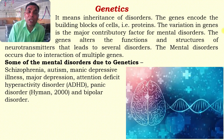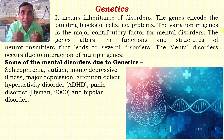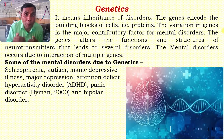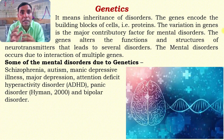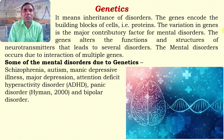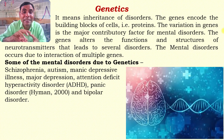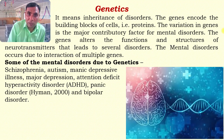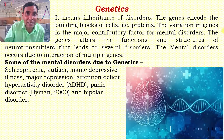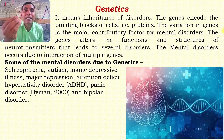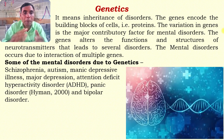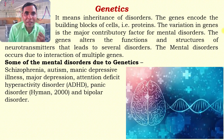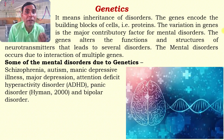Gene variation interferes with neurotransmitters — either their synthesis, release, proper flow, or balance. Sometimes multiple genes interact together and lead to mental disorders. Certain mental disorders found to be linked to faulty genes, gene variation, or interaction of multiple genes include schizophrenia, manic depressive illness, ADHD, depression, panic disorders, and bipolar disorders.